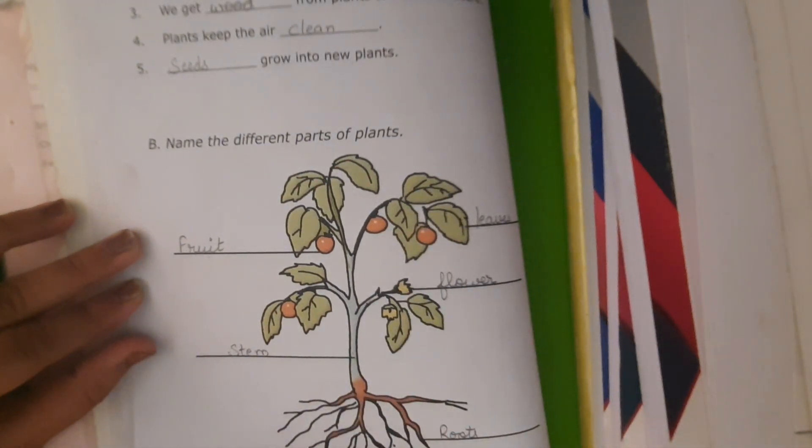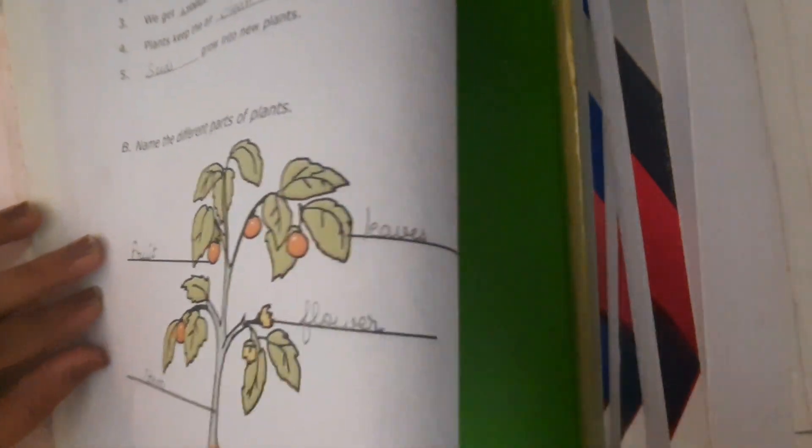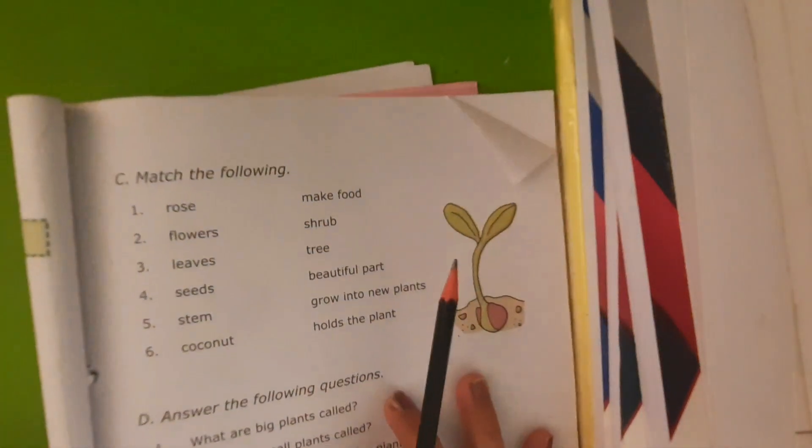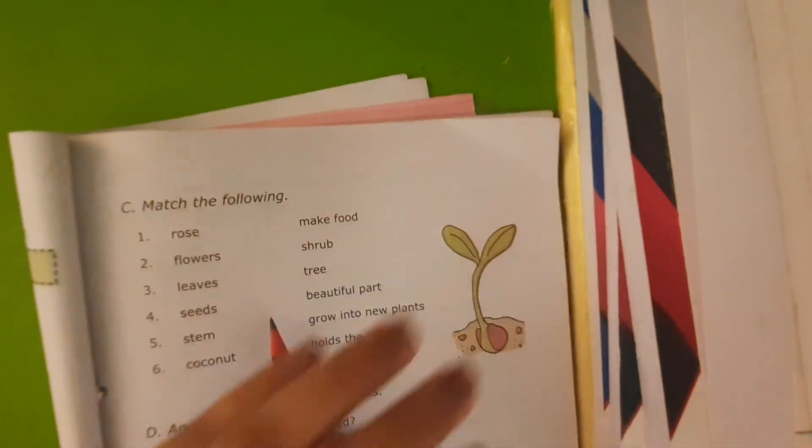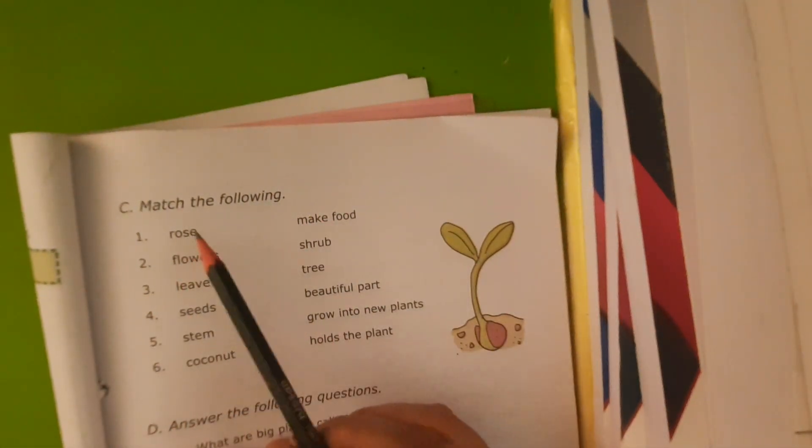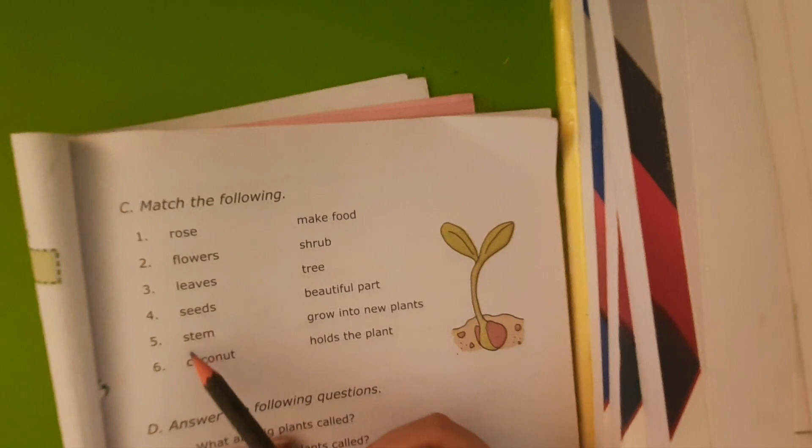So you have to draw this diagram on your notebook and also label different parts, and you can also do it on your books. So now we are going to do matching. Third part of the exercise is match the following.